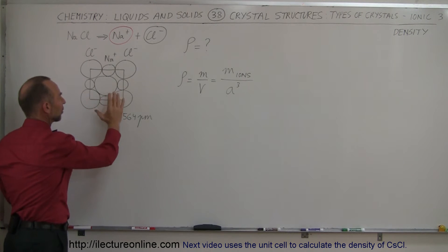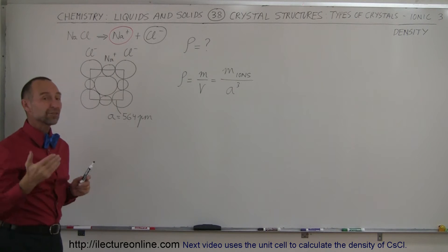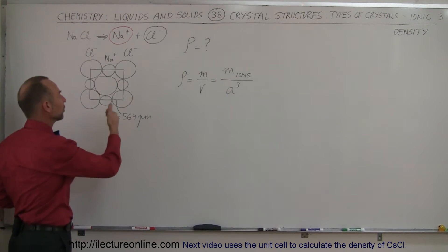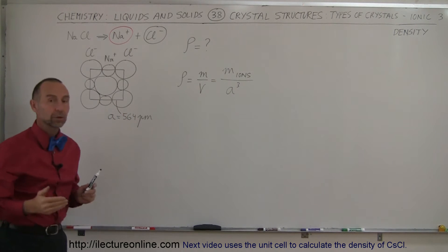They attract it, they repel it a little bit more, it pushes the ions out just a little bit more than you would expect in the normal average bonding between sodium ions and chlorine ions.